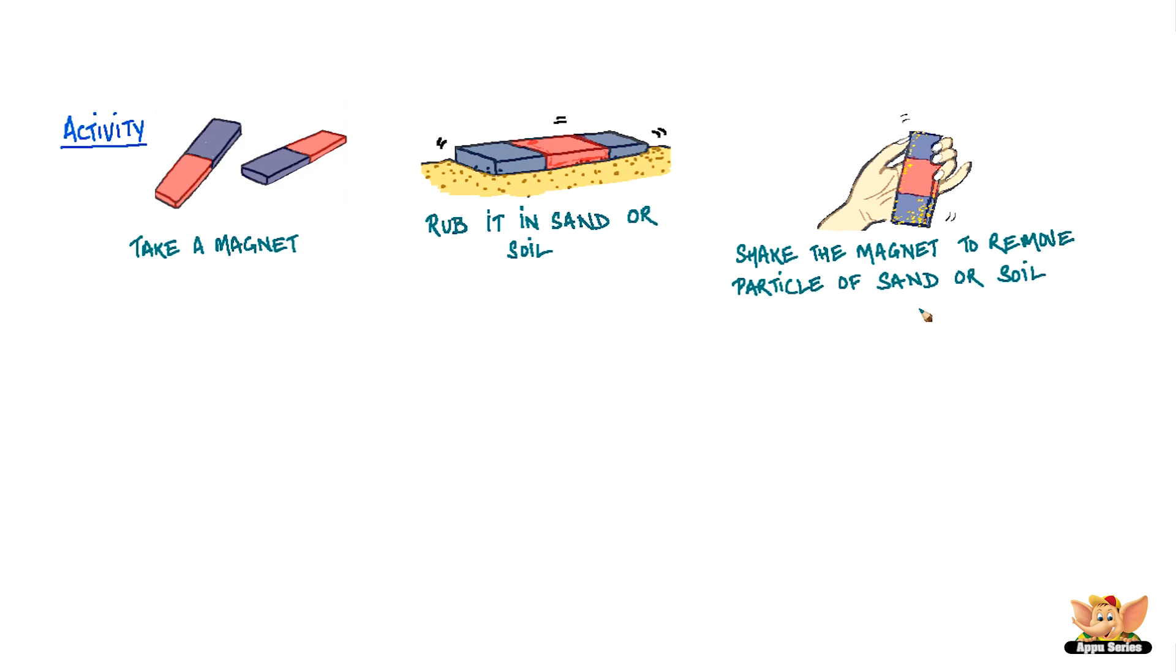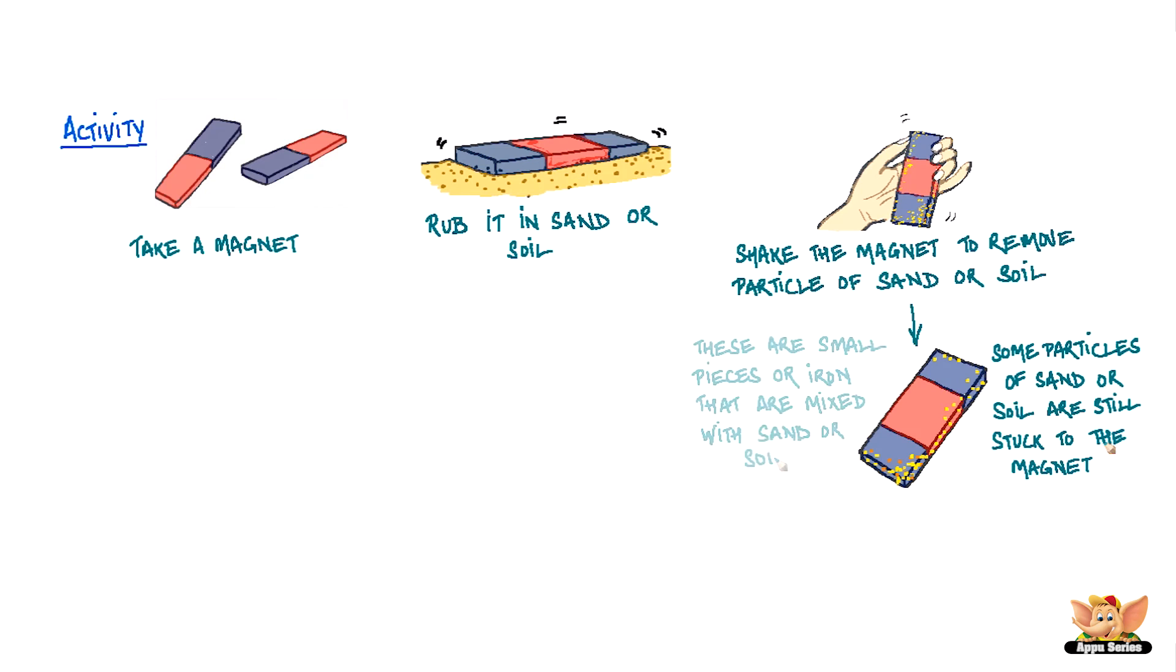You will find that some particles of sand and soil are still stuck to the magnet. These are small pieces of iron that are mixed with sand or soil. Some places might have more iron particles in the soil than others as soil varies in different places.